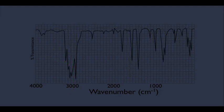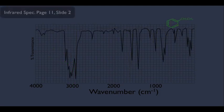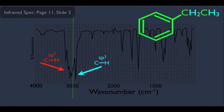Let's look at a specific example. This IR spectrum is for a molecule with a benzene ring and an ethyl group. The carbons in the ethyl group are SP3 hybridized, so we see SP3 CH stretches to the right of the 3000 mark, corresponding to those hydrogens on the ethyl group. The molecule also has CH bonds where the carbon is SP2 hybridized — in the benzene ring — so we see CH peaks to the left of the 3000 mark.